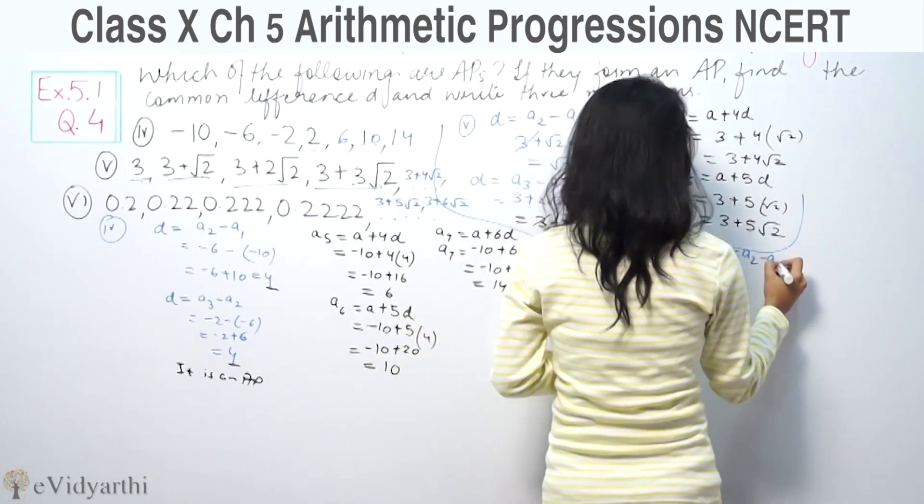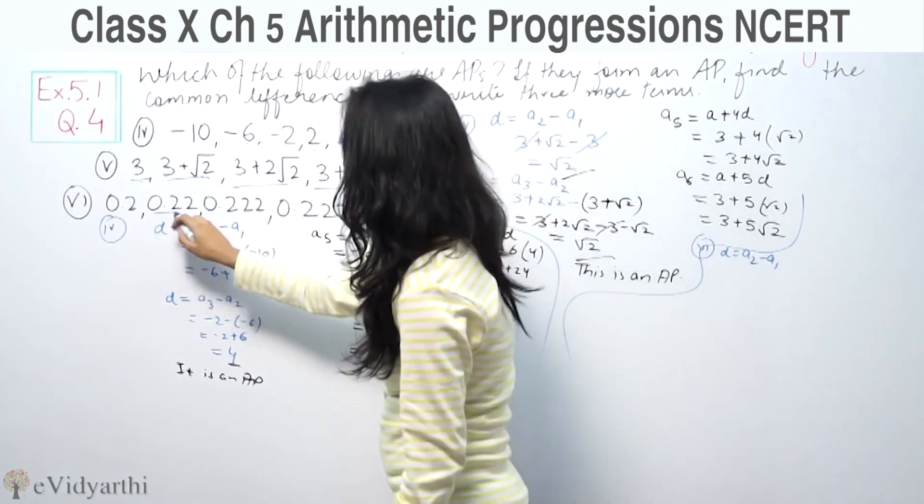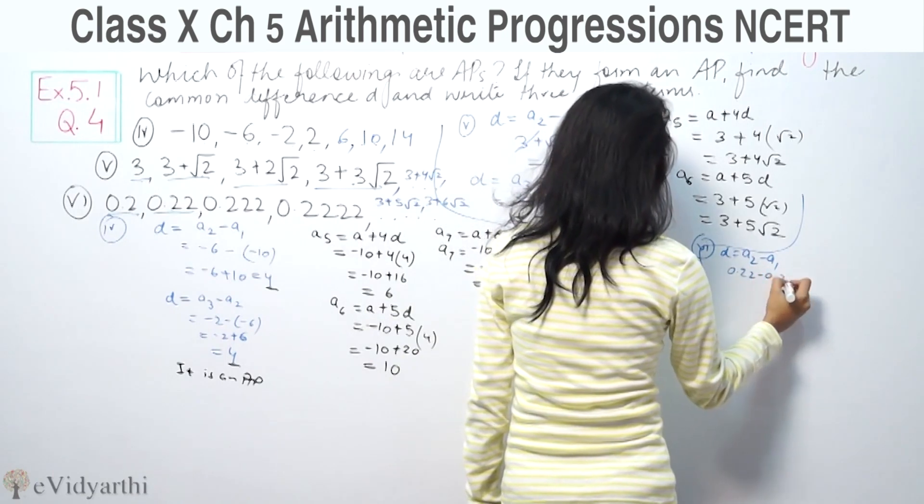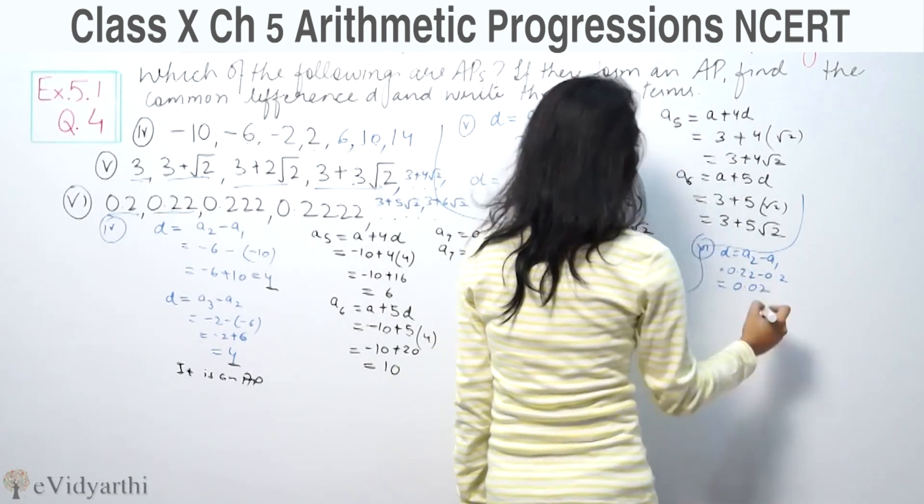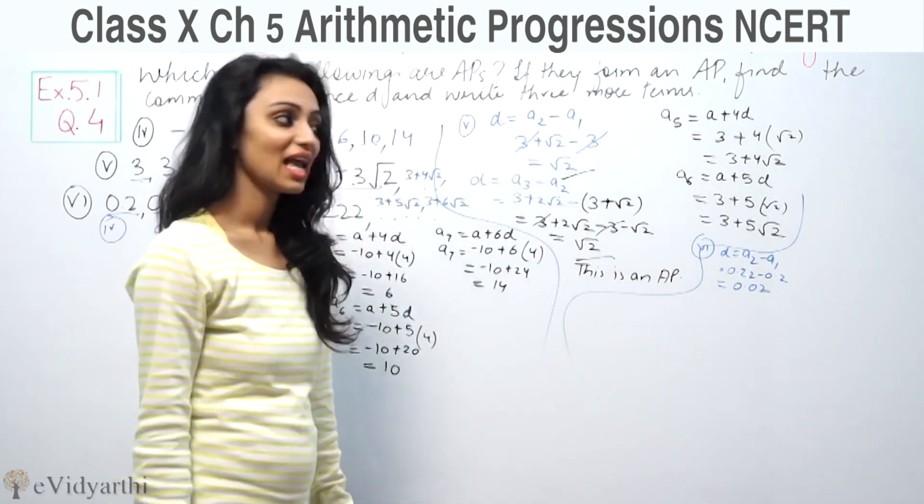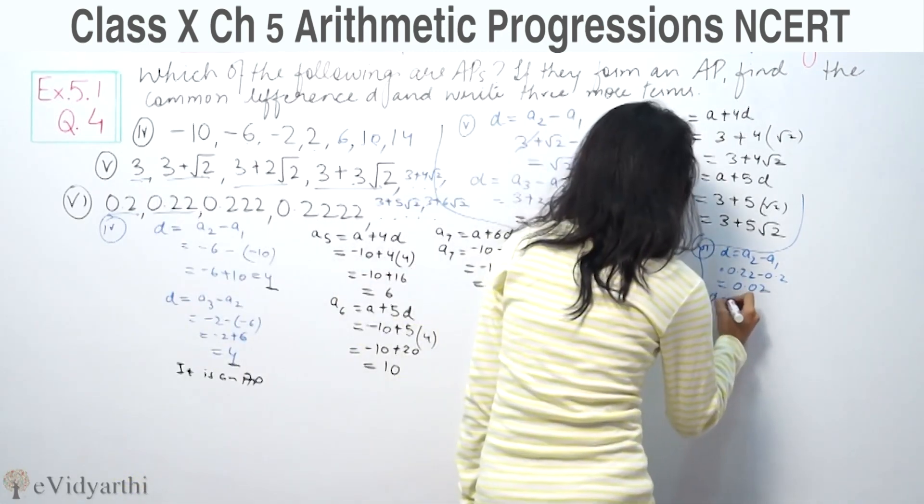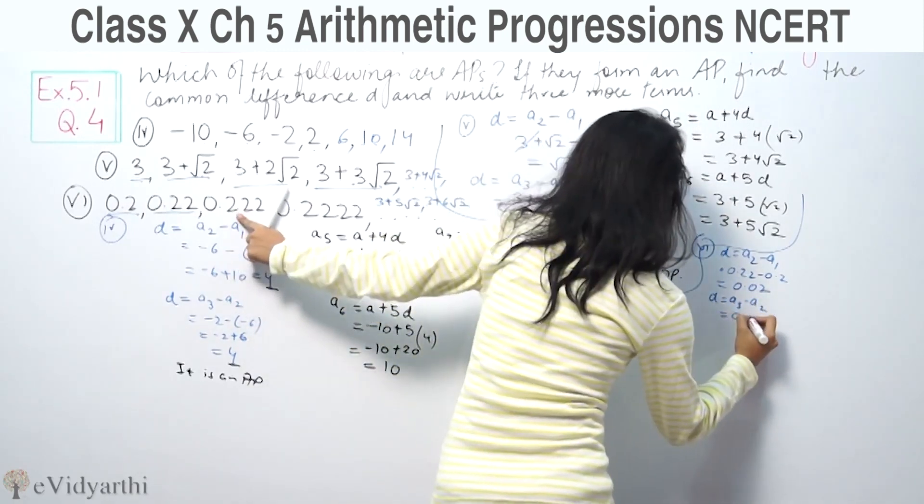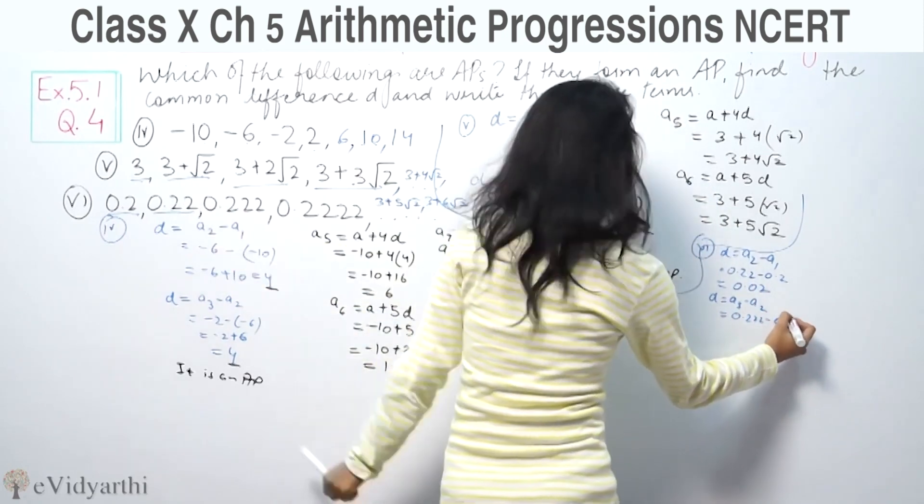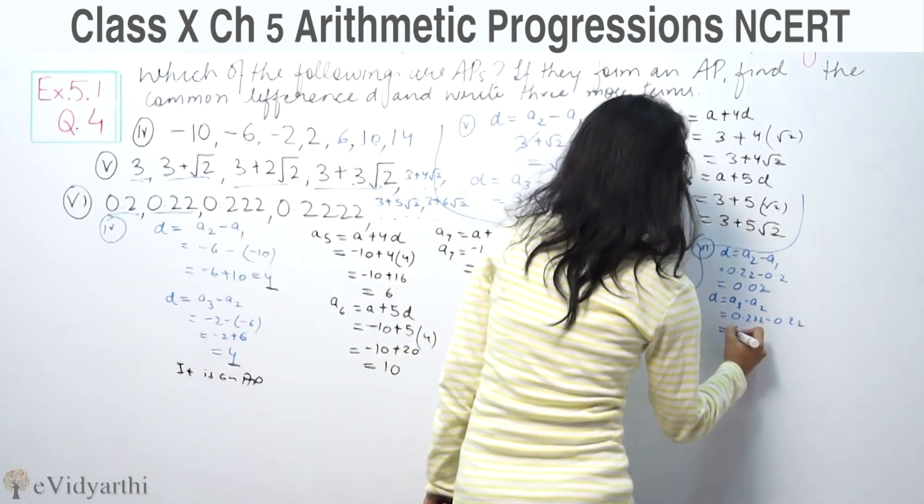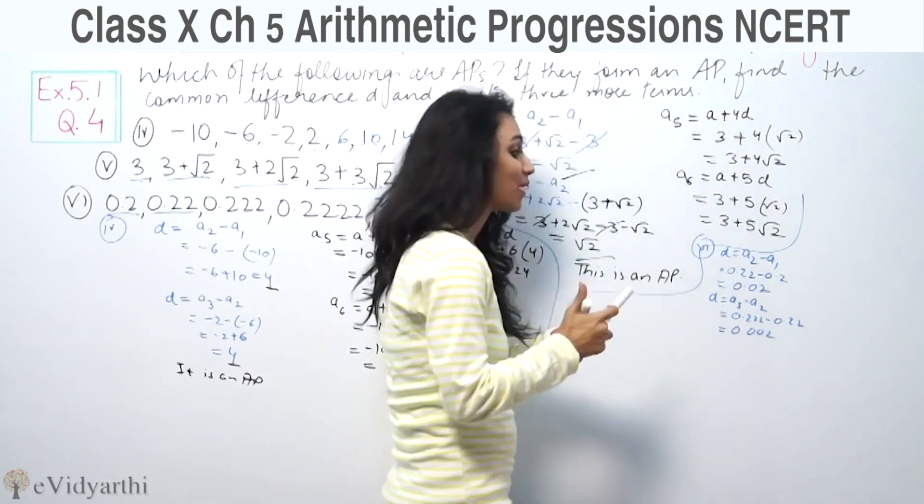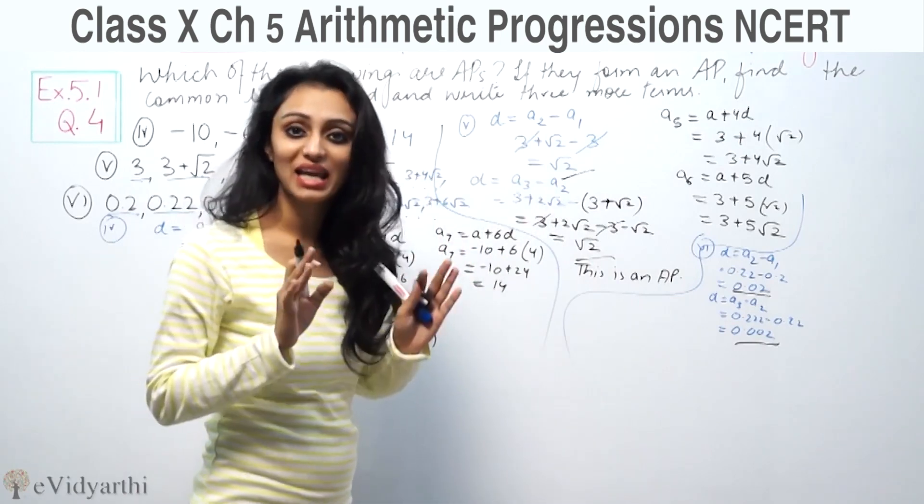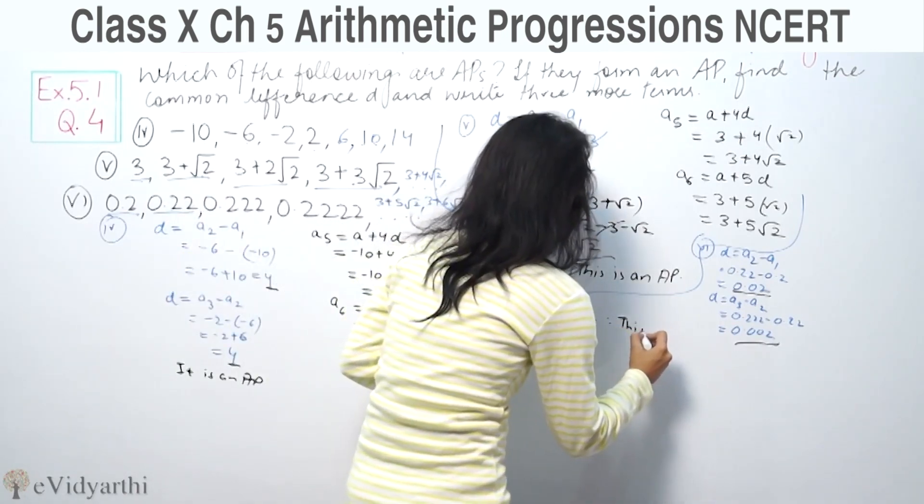For part (iii), common difference A2 minus A1. A2 is 0.22 and A1 is 0.2, so 0.22 minus 0.2 equals 0.02. After checking the subsequent differences, the common differences are not equal, therefore this series is not an AP.